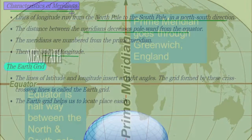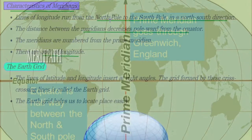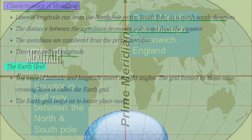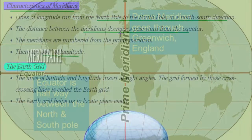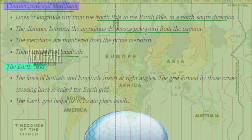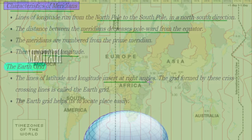The lines of longitude always run in a north-to-south direction, from the North Pole to the South Pole. The distance between meridians decreases from the equator. These meridians are numbered from the Prime Meridian and there are 360 degrees of longitude in total.